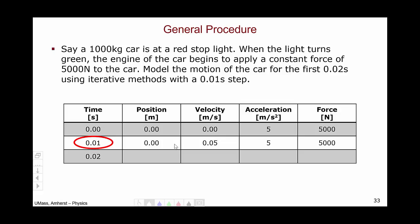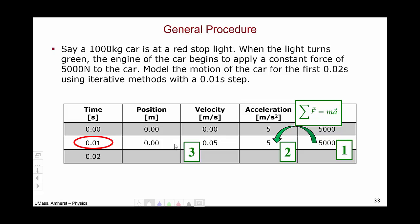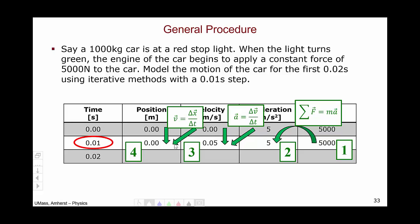Let's take a pause from our example to think about a general procedure. First, identify what the force is at any given instant. Second, translate that force to an acceleration using Newton's second law. Third, solve for the velocity using one instant to predict the next and the definition of acceleration. Finally, calculate the position, where again one instant predicts the next and we use the fundamental definition of velocity.